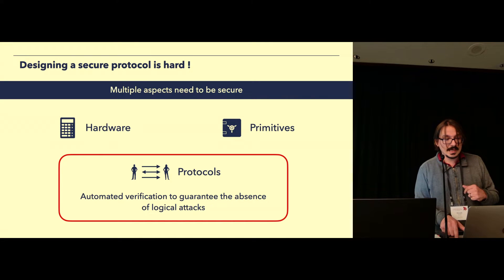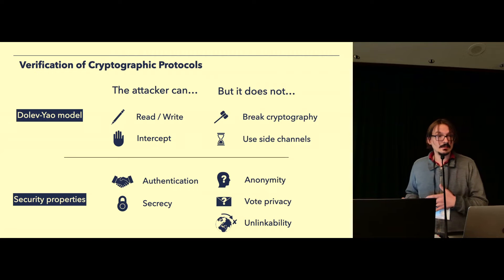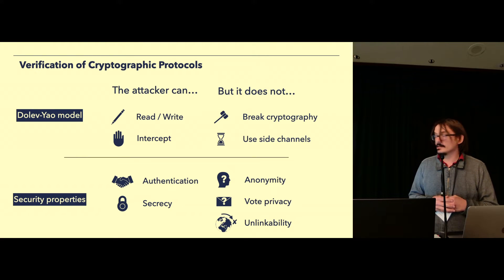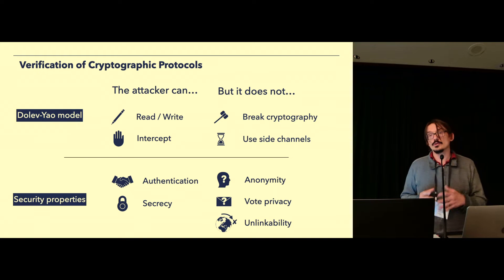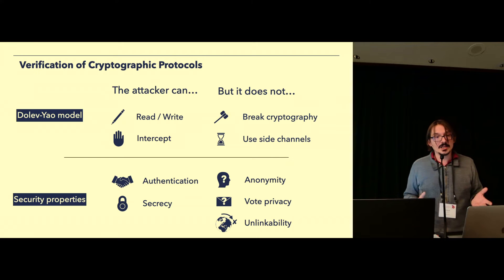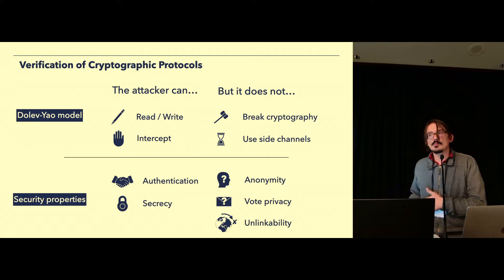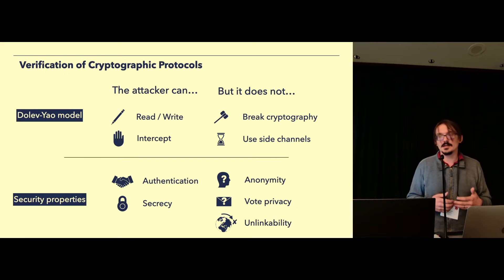We place ourselves within the symbolic model called Dolev-Yao model, in which attackers control the networks, so they can intercept messages, read, and write messages on the network, but they cannot break the cryptography or use side channels. We verify a wide range of security properties, going from the more classical ones like authentication and secrecy, to privacy type properties like anonymity, vote privacy, and unlinkability, and of course the list is not exhaustive.